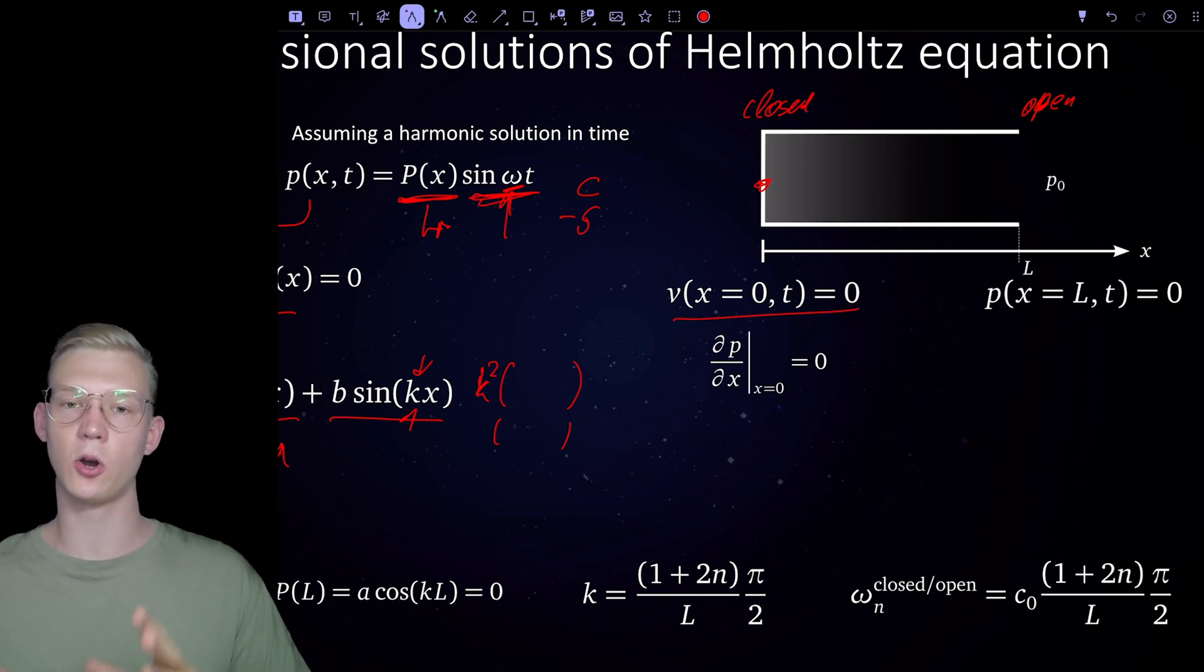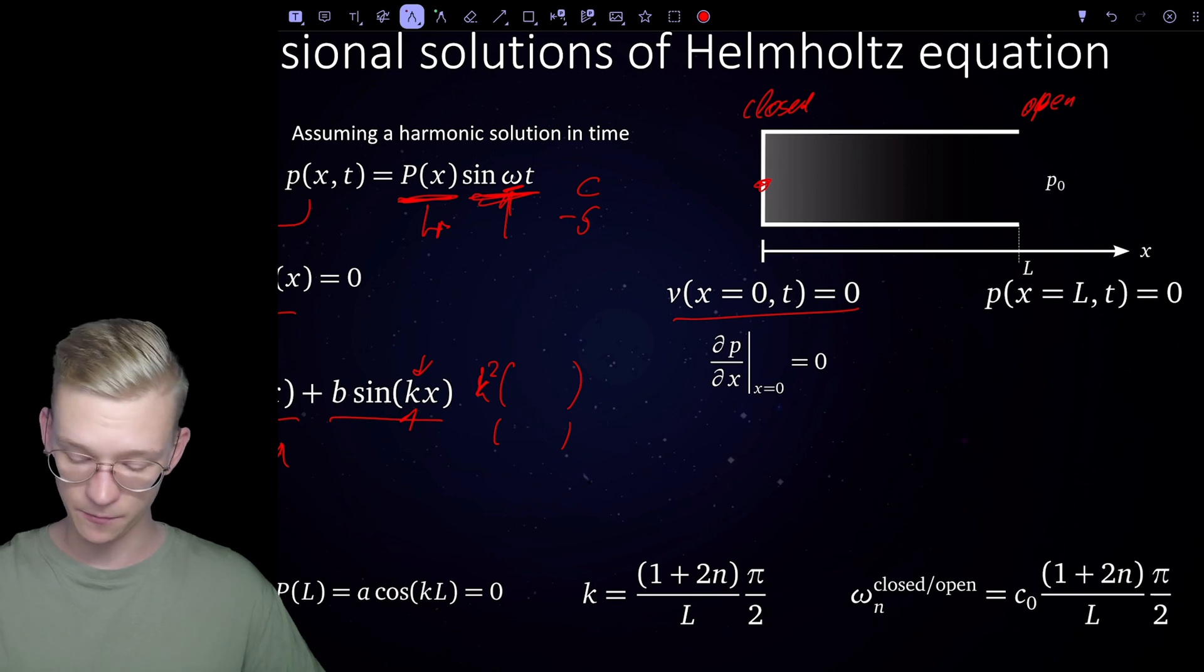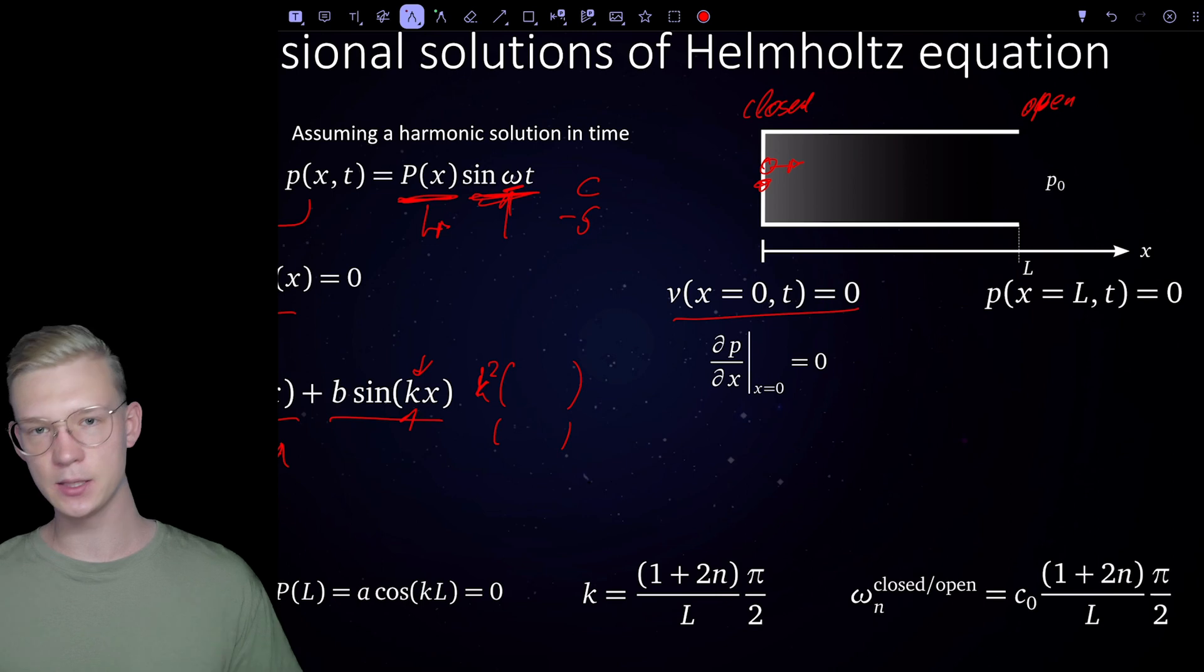Why is the velocity at the closed end always zero? Well because nature doesn't like voids. If we have some velocity in this direction, there will be a void at that point. So we're saying at this position the particles can't move.